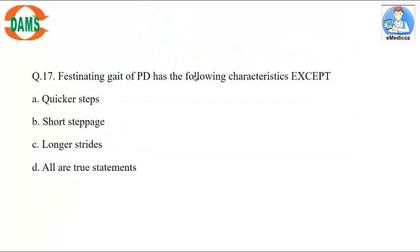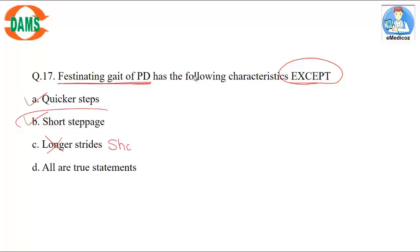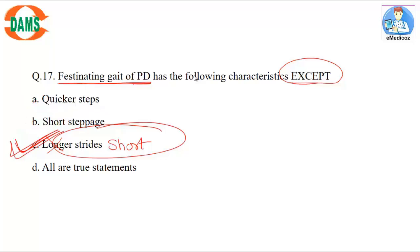Question 17: The festinating gait of Parkinson's disease has the following characteristics except. It is an inefficient gait with quicker steps — true. The strides become short — true. The exception is option C. Both other listed features are true statements; option C is the correct answer.